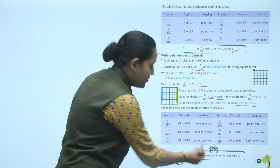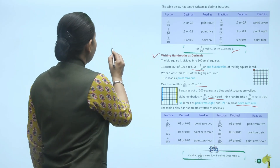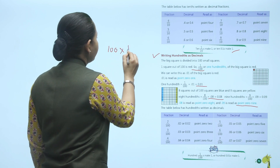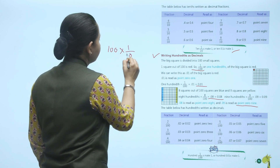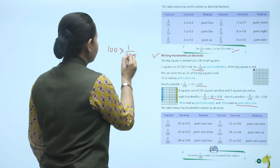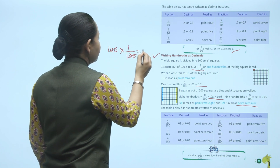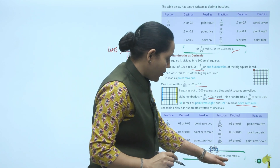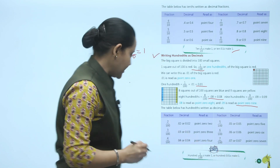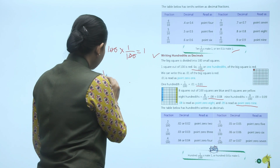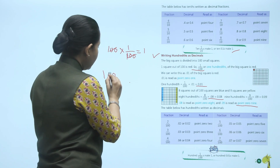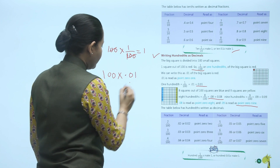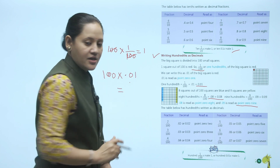100 hundredths make 1. Because 100 into 1 upon 100 equals 1. Similarly, 100 times 0.01 equals 1. Understand?